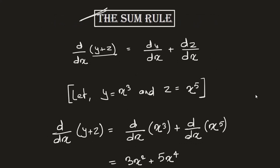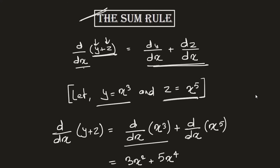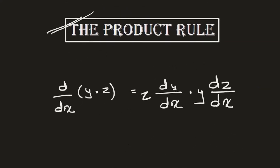The sum rule says: to find the derivative of (y + z) with respect to x, differentiate y and z separately and sum up the outputs. For example, if y = x³ and z = x⁵, you perform separate differentiation for both terms and add the results. As simple as that.